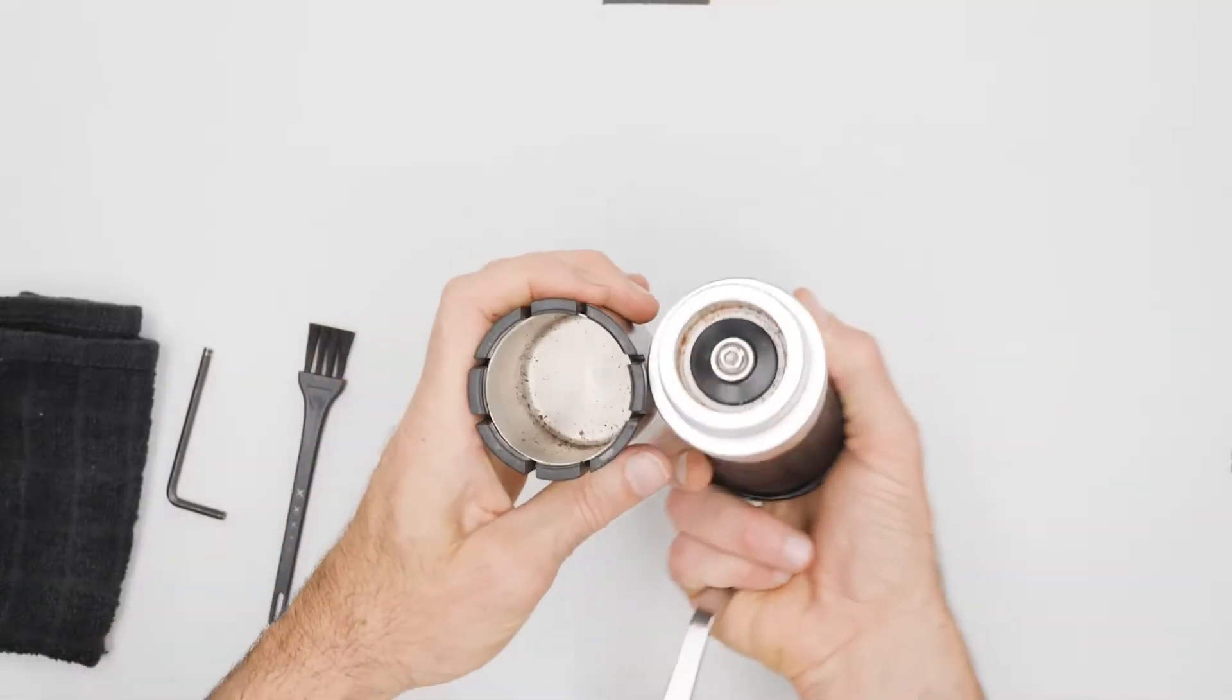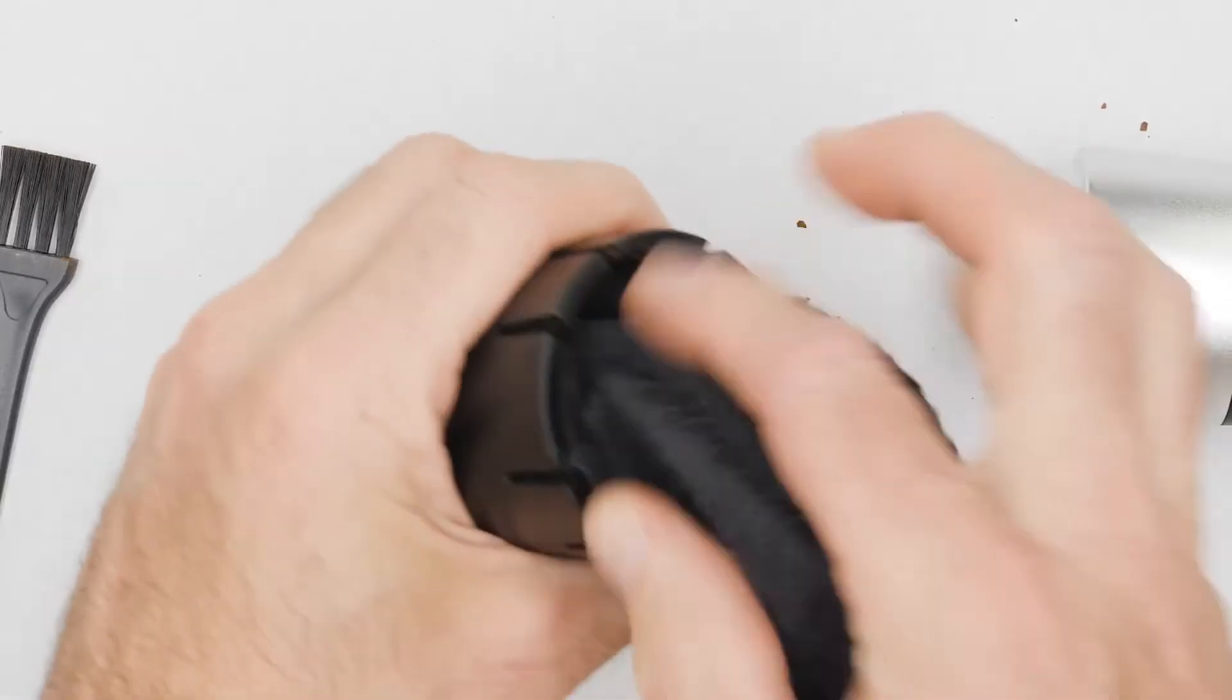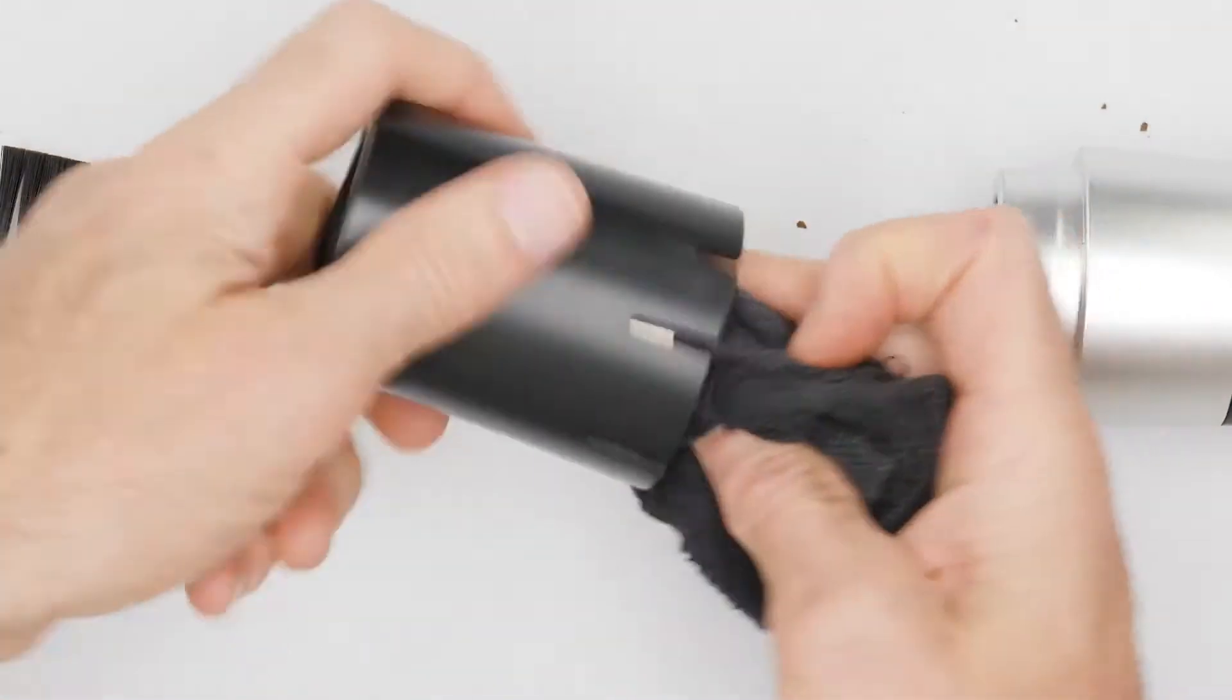When cleaning the Royal, only use a dry towel. Water, even moisture, can lead to surface oxidation on the steel burrs.